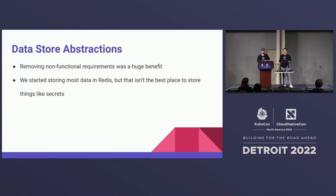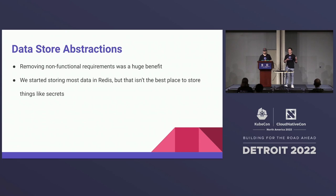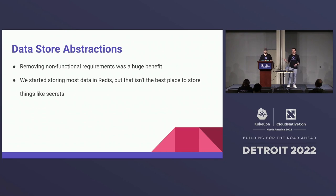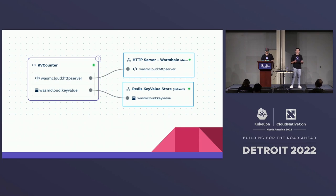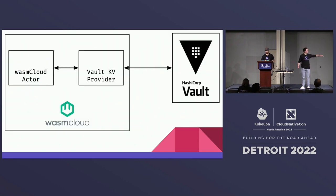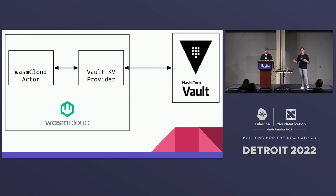One of the immediate benefits we saw was: everything we coded for the backend that was interacting with a key value store was interacting with an abstract key value store. We were slotting in Redis, and then we realized we're going to be storing some secrets — things we don't want just sitting in a plain text key value store. So instead of modifying our applications, we simply went out and wrote a HashiCorp Vault implementation. The line that was dragging to Redis, we just dragged to Vault instead. With Wasm Cloud, all of our actors that needed to store secrets could interact with Vault, and none of that code actually needed to change when going from Redis to Vault. So immediately the abstraction of capabilities is something that we saw benefits in.